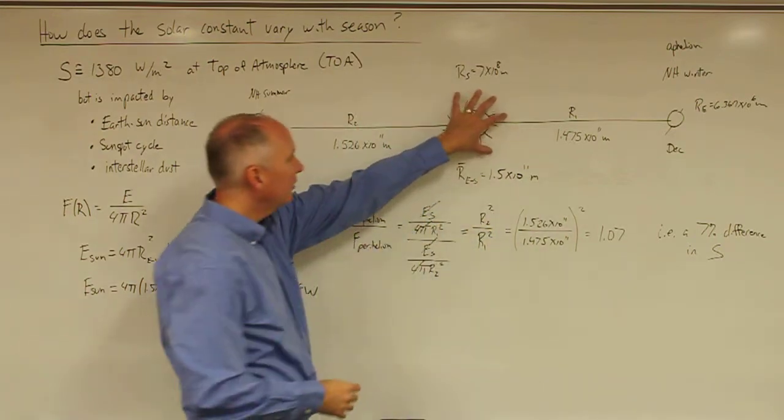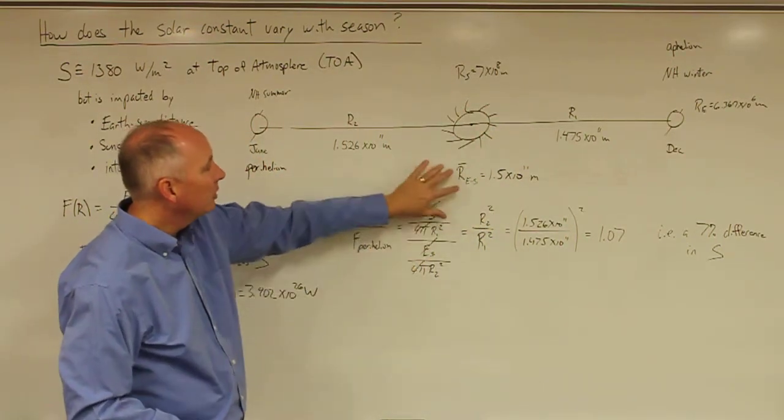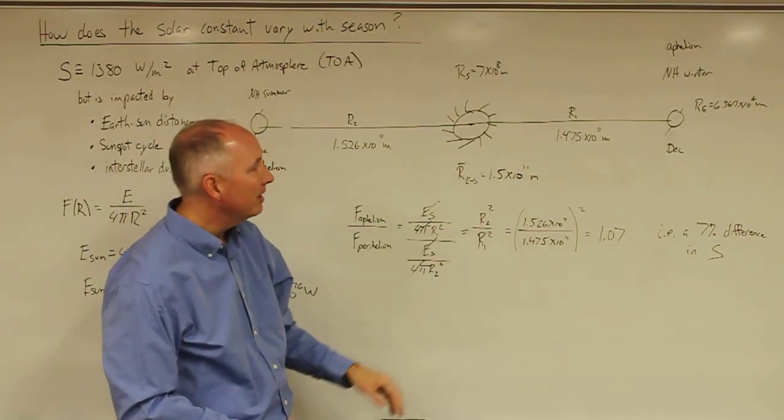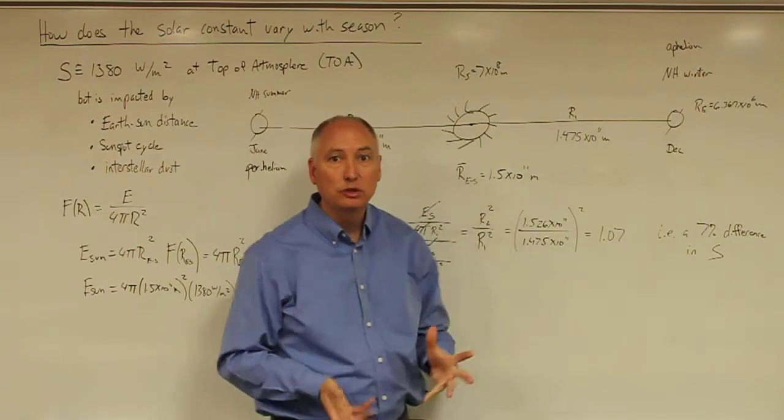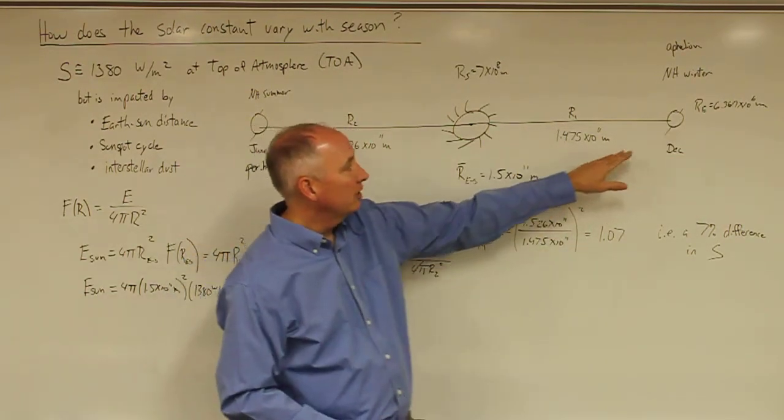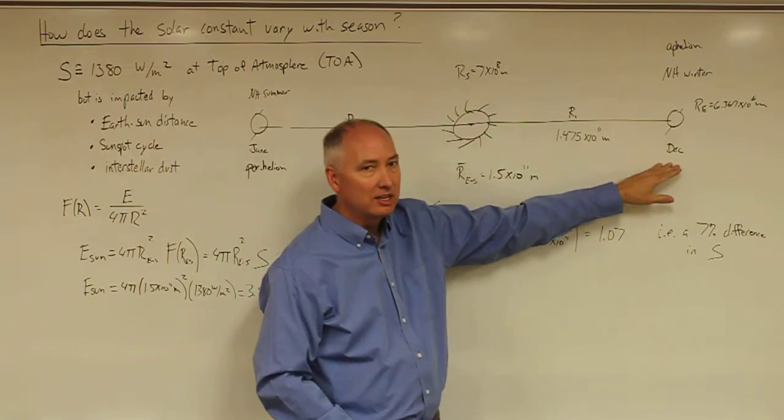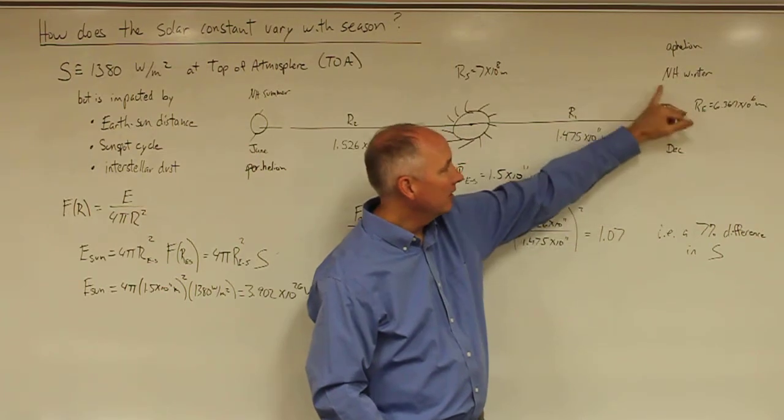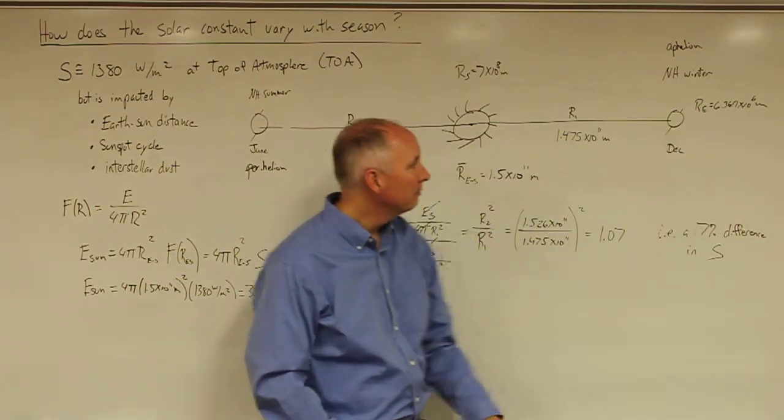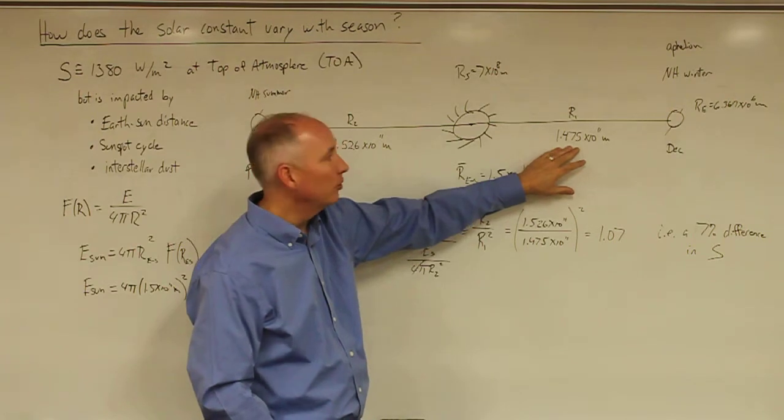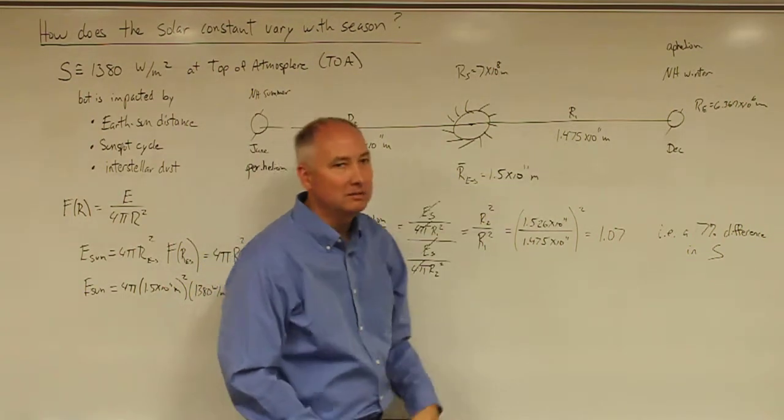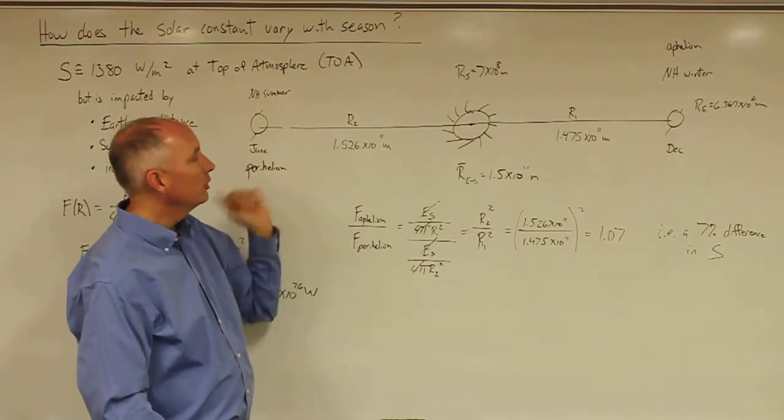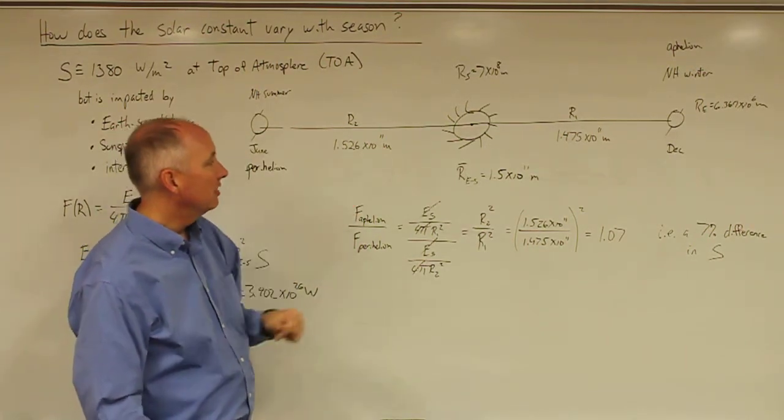So, we know that the Sun is the center of our solar system and that the average distance between the Earth and the Sun is 1.5 times 10 to the 11th meters. But the Earth is in an eccentric orbit. We're actually closer to the Sun in the month of December than we are in the month of June. We refer to that as aphelion, and it occurs during the Northern Hemisphere winter. The distance from the Sun in the Northern Hemisphere winter is 1.475 times 10 to the 11th meters. In the Northern Hemisphere summer, which is at perihelion, we're further away from the Sun at 1.526 times 10 to the 11th meters.